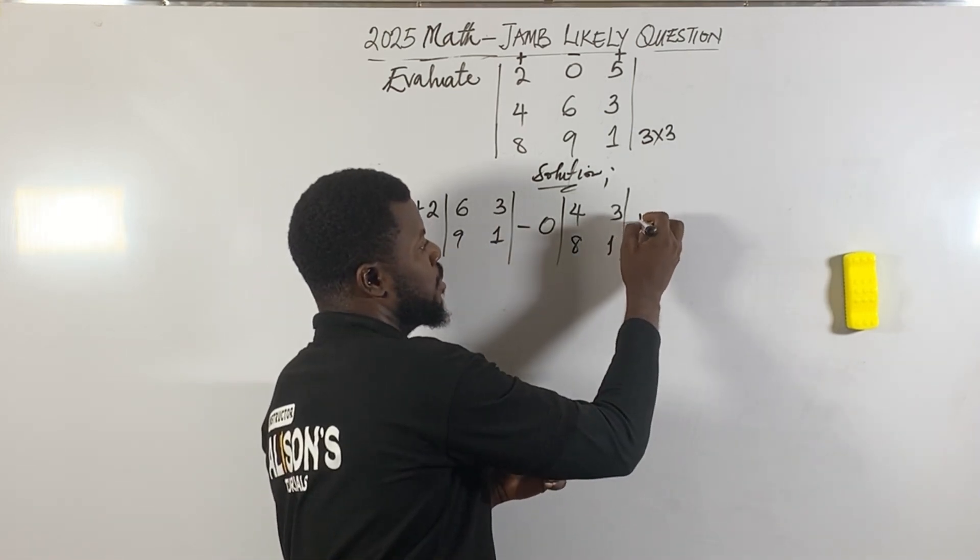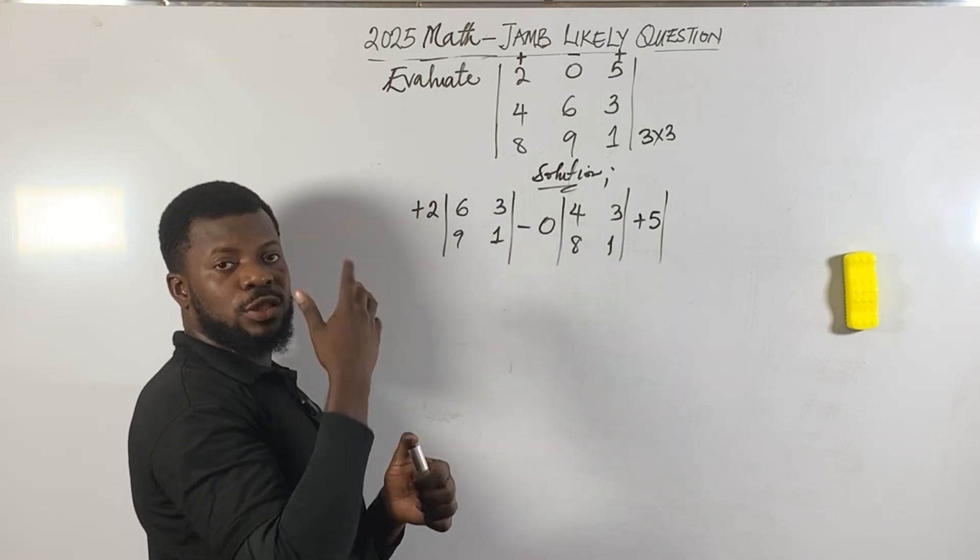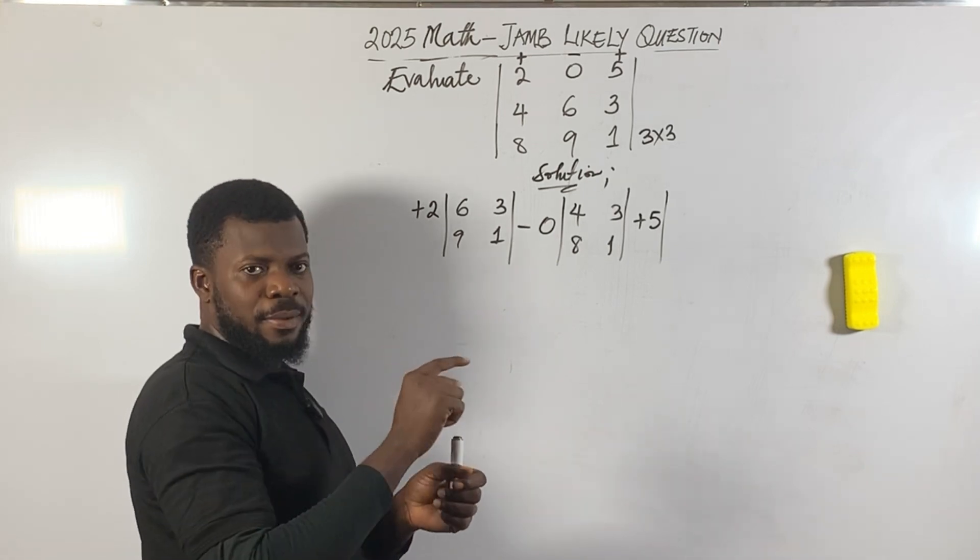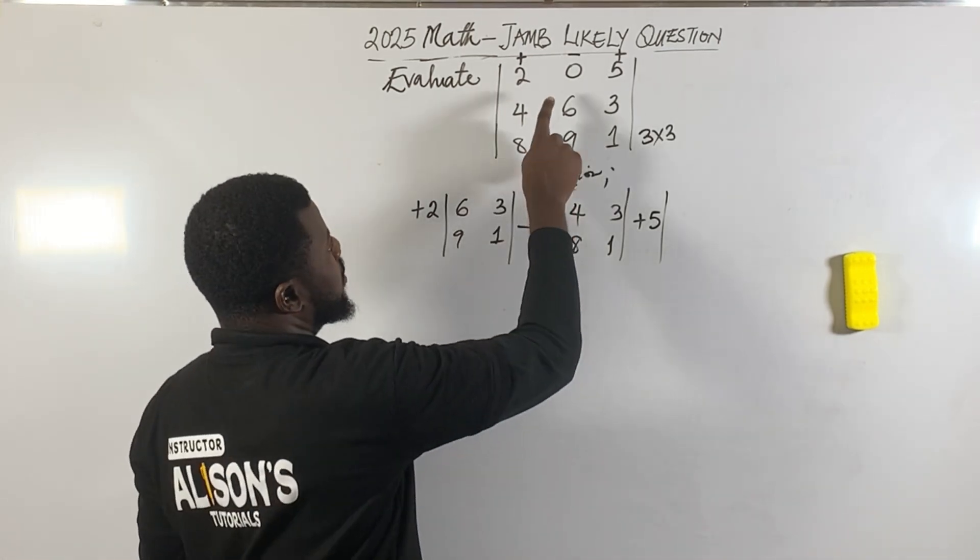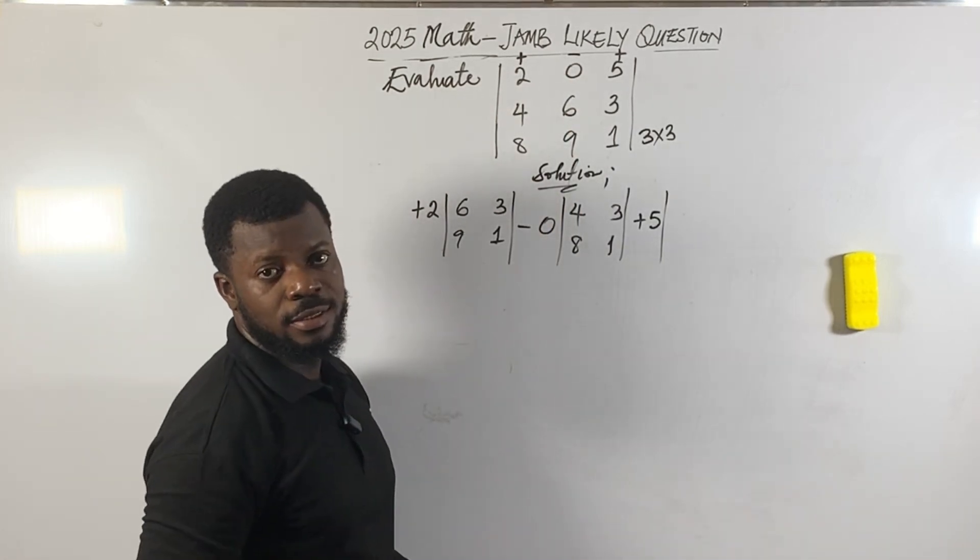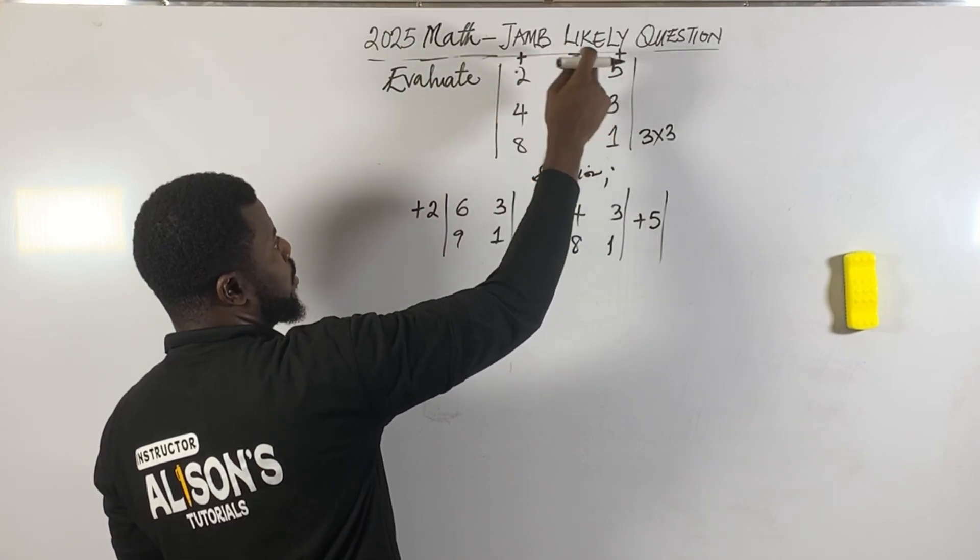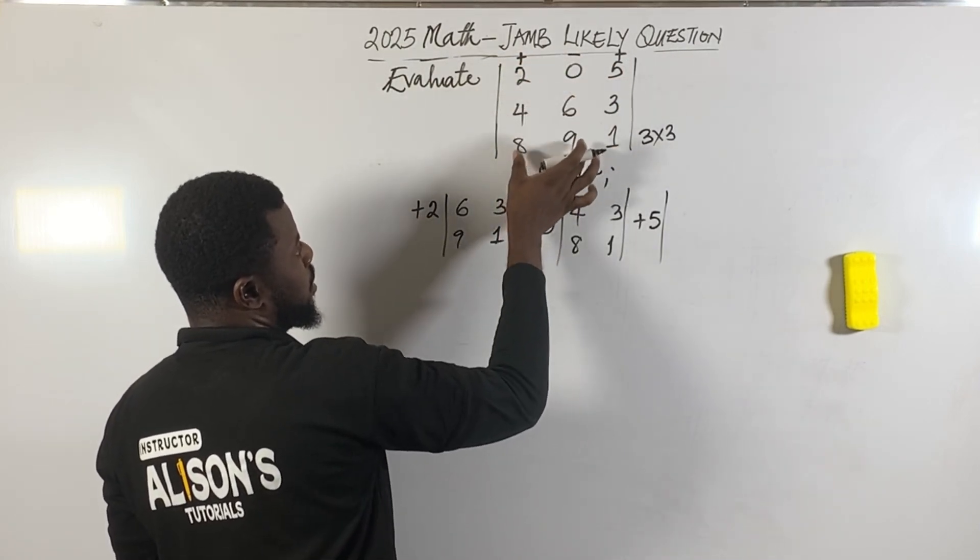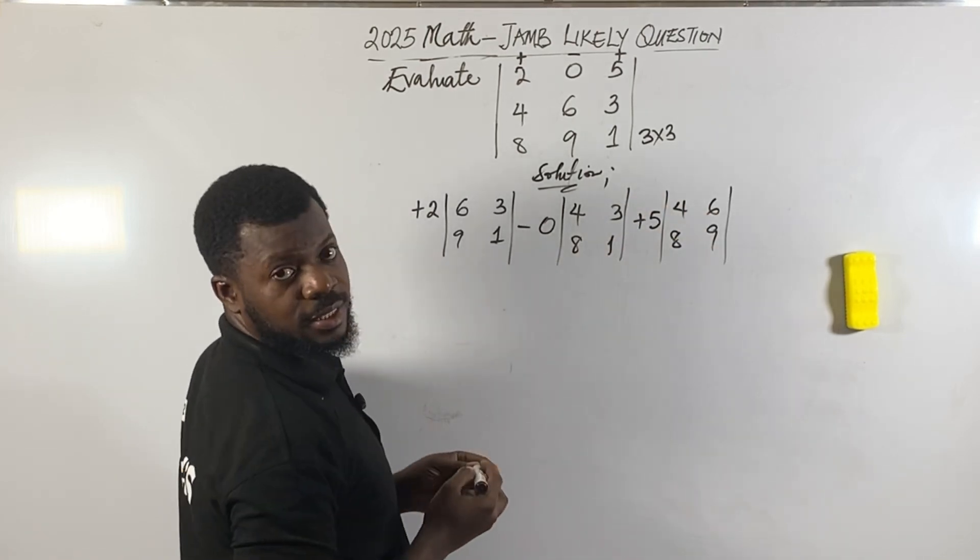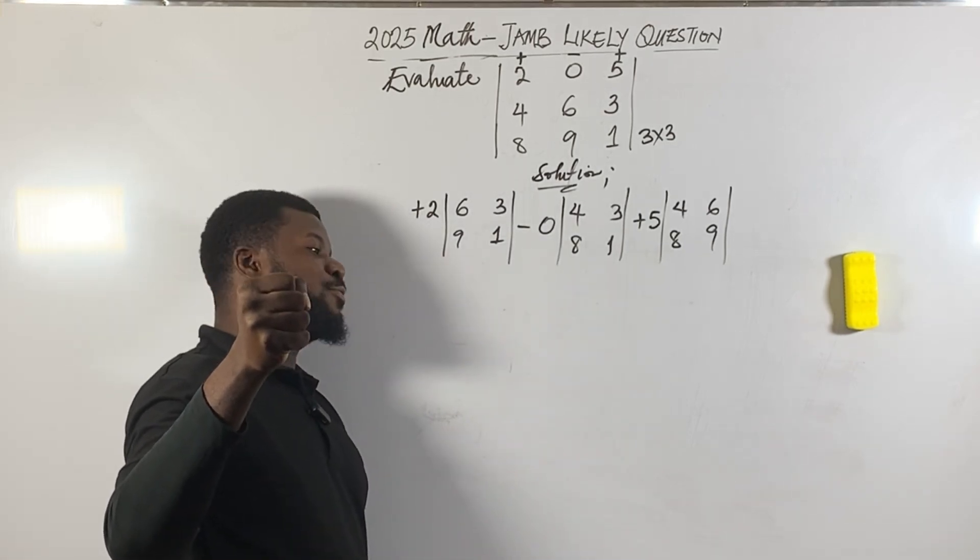Now for the last one - plus 5 in the comment section. If you choose this plus 5, what will remain? Type in 1, 2, 3, 4. When you choose this plus 5, you line with this one, cancel this row and column. So what remains is 4, 6, 8, 9.